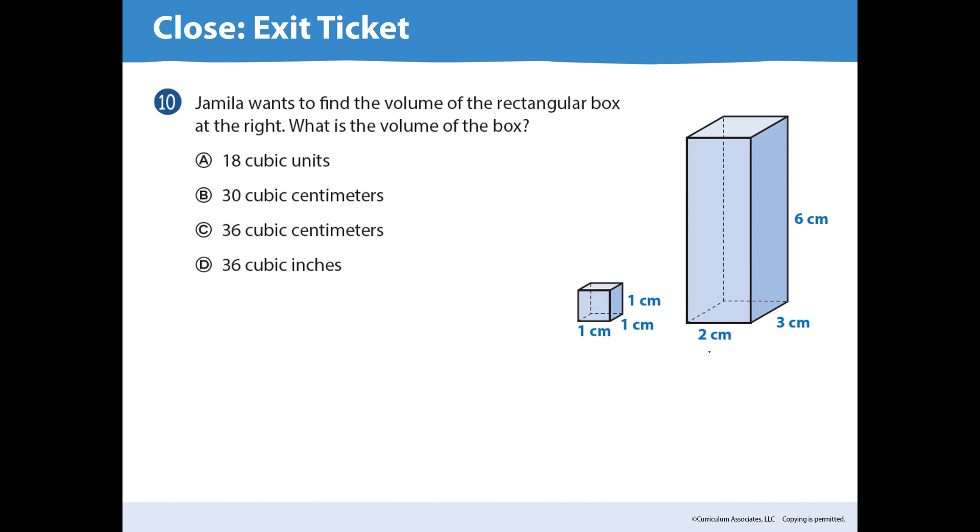When we multiply 2 times 3 times 6, we get 2 times 3 is 6. And 6 times 6 is 36. But I see two answers that say 36. So, what we really need to look at is the unit of measure. So, this is centimeters. And there are centimeters. So, the answer is C. 36 cubic centimeters.